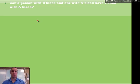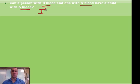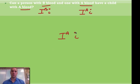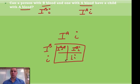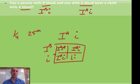Can a person with B blood and a person with AB blood have a child with AB blood? B blood, if not specified, is heterozygous — capital I-B, little i. AB blood is capital I-A, capital I-B. Let's do the Punnett square: they can have a child with AB, B, O, or A. So can they have a child with A? Absolutely — one out of four, or 25% chance. In fact, these two parents can have every blood type there is.